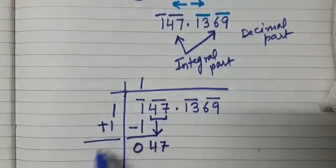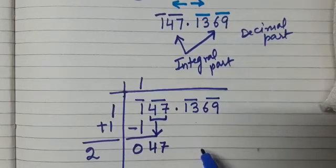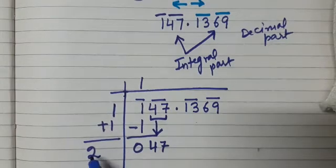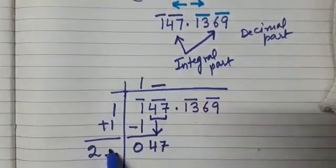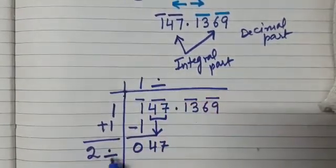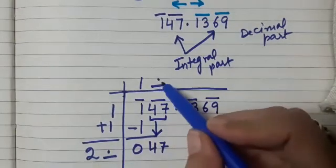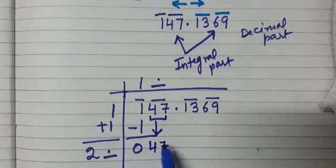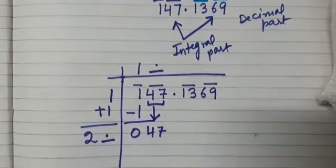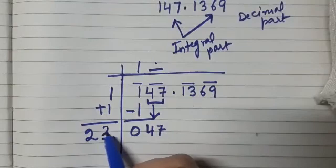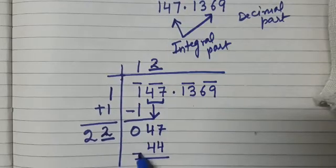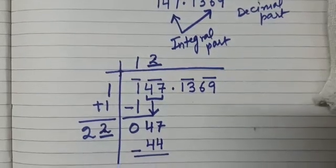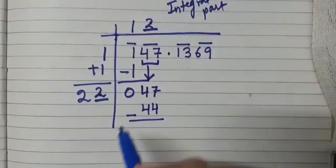Bring down the next period which is 47. Then 1 plus 1, this is 2. And then what we are going to do is we will be thinking of a number over here, so that we get a two digit number multiplied by the same digit gives us a number less than or equal to this 47. So we can see here that 22 into 2 is 44. Now subtract 44 from 47. What do we get? We get 3.